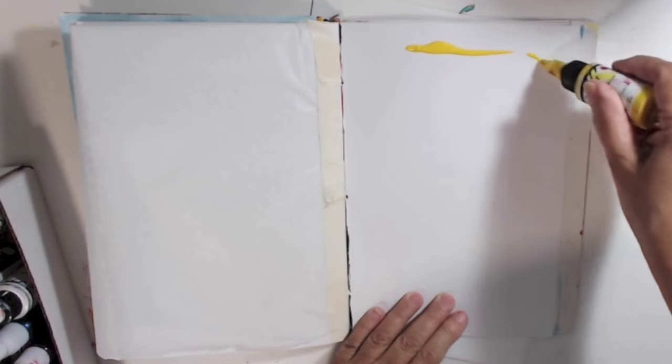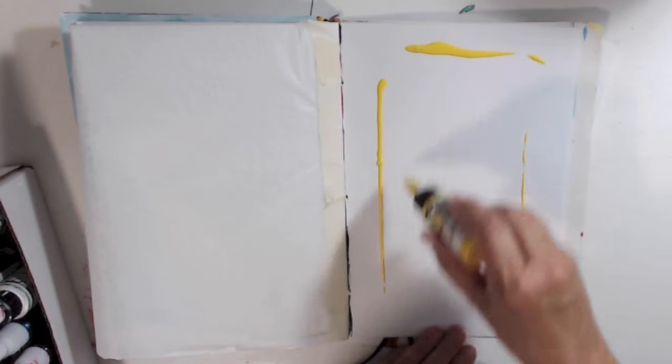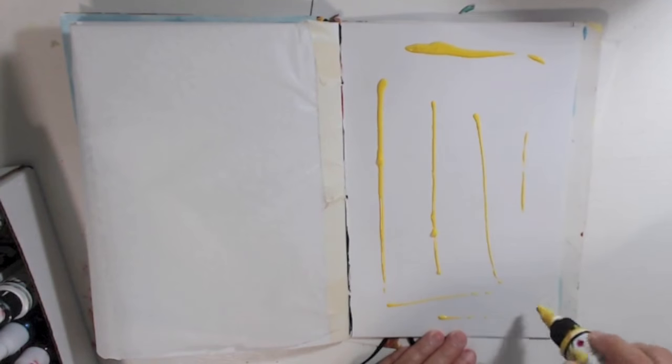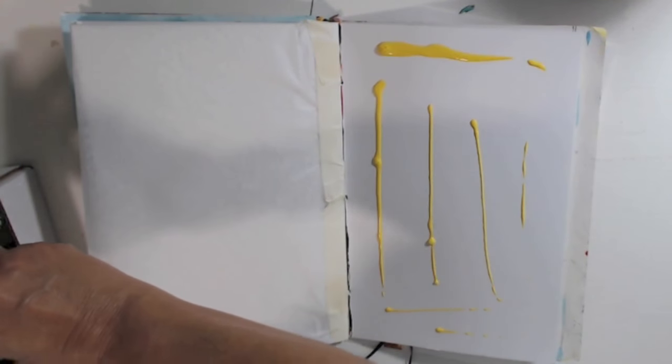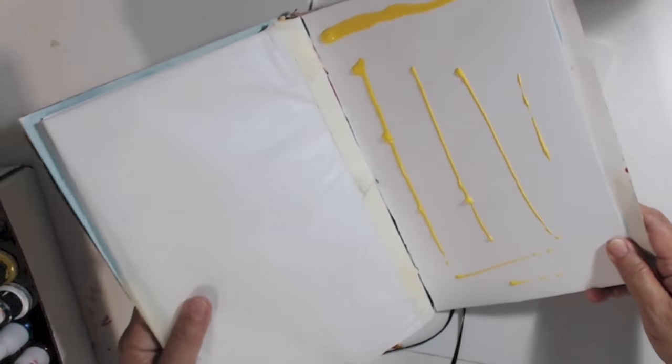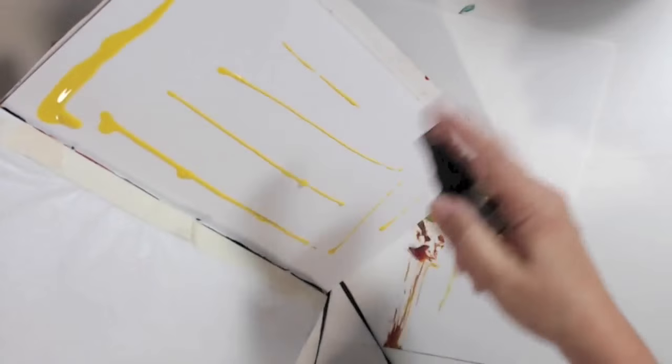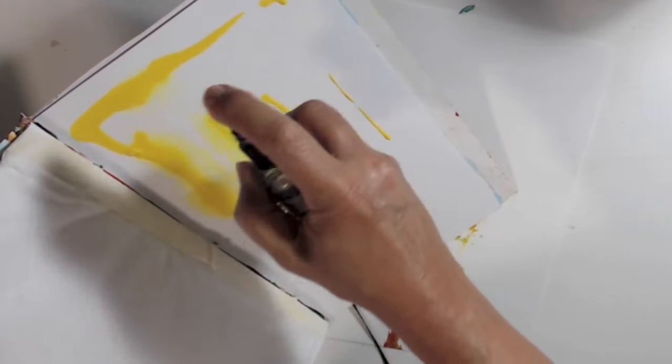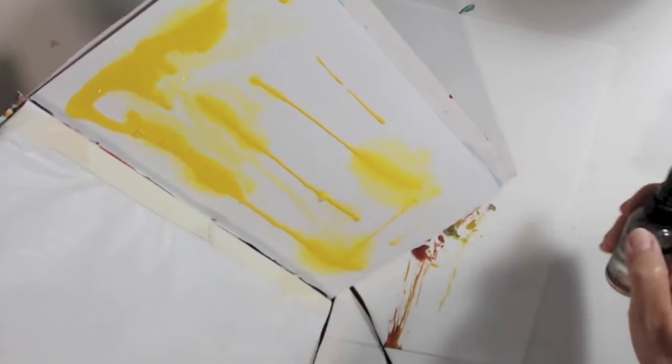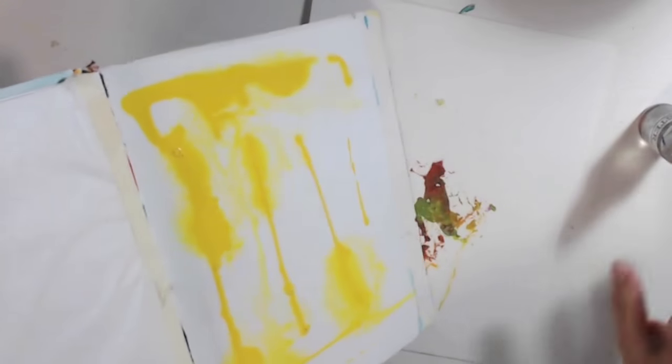I'm going to start spraying my page with water. I've covered the other page and put some tape down the center. I'm using golden high flows and I'm going to spray some water on it and let it flow onto another piece of paper. I love when the paint runs down the page.